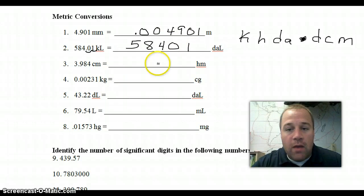To go from centimeters to hectometers, centimeters is right here. We're going 1, 2, 3, 4 places to the left. So here 1, 2, 3, 4 places to the left. And again we're going point and we fill those empty spots with zeros: 0.0003984.